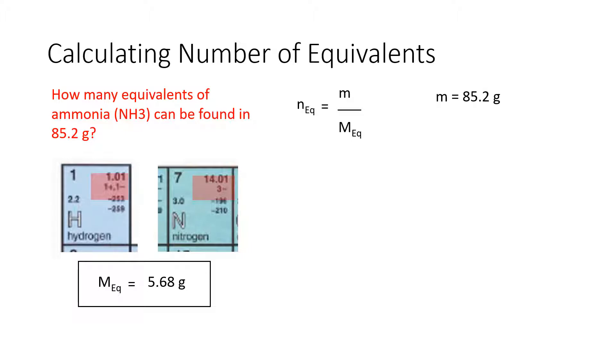So the mass we know of total, the little m, is 85.2 grams. The mass of one equivalent we know from our calculations is 5.68 grams. The number of equivalents therefore then will be 85.2 grams divided by 5.68 grams, giving us a final result of 15 equivalents. Which means that in this reaction with that amount of ammonia we would have 15 of these little chunks or units or equivalents of ammonia.